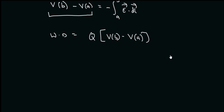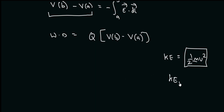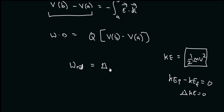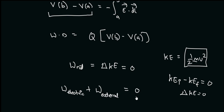Now, as we move the charge from point A to point B, if we are not changing the velocity, then we are not changing its kinetic energy, since kinetic energy equals half M V squared and M is constant. So if the velocity is not changing, the kinetic energy will also not change — the change in kinetic energy will be equal to zero. From the work-energy theorem, we know that the net work done is equal to the change in kinetic energy, which is equal to zero. We can split up the net work done into the work done by the electric field plus the work done by external forces, and this as a whole will be equal to zero.